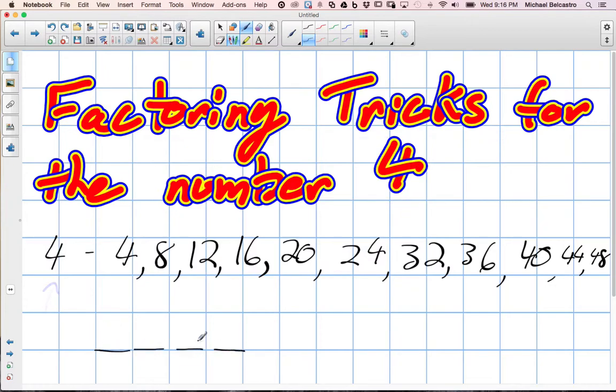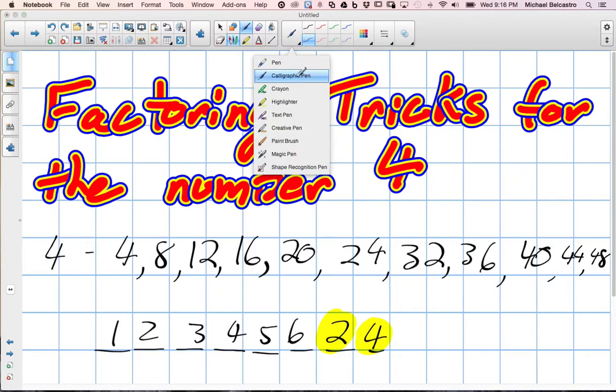So we have maybe an 8-digit number: 1, 2, 3, 4, 5, 6, 7, 8. We really just need to focus on the last 2 digits of the number. Everything up to that could be 1, 2, 3, 4, 5, 6, and then if the last 2 digits are, say, 24...